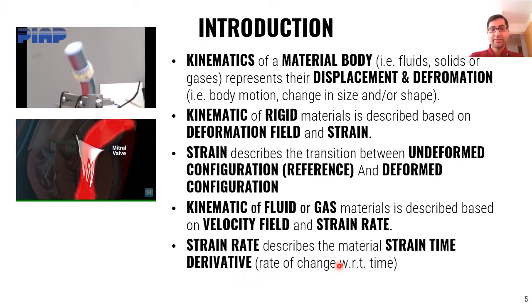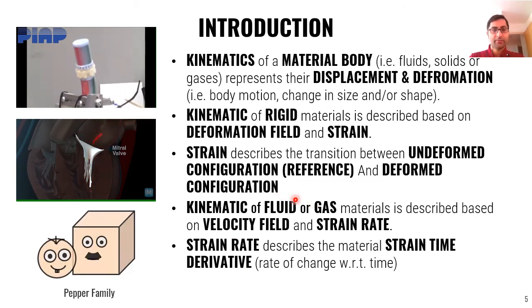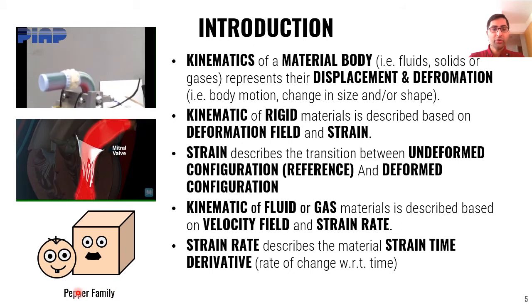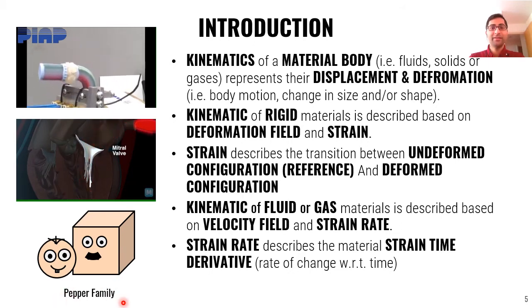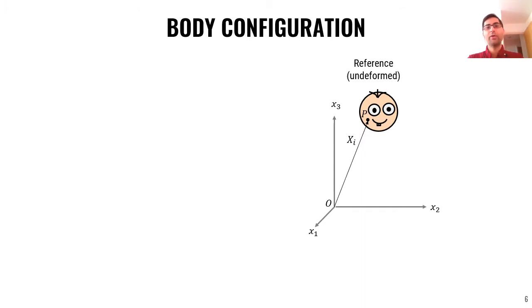A strain rate describes the material strain time derivative. So when we talk about velocity or strain rate, we're talking about time derivative of a deformation field and a strain. During the lecture, we're going to use a pepper family to help us describe the concept. So let's start with body configuration.